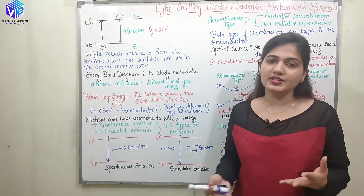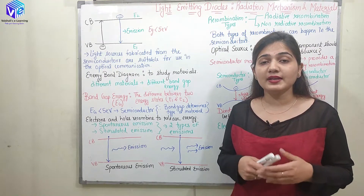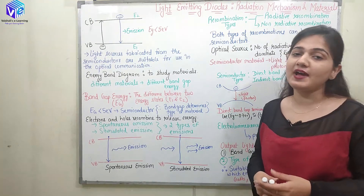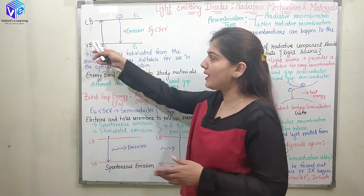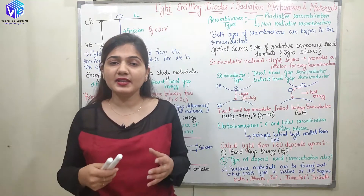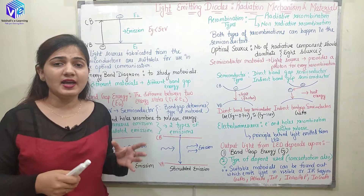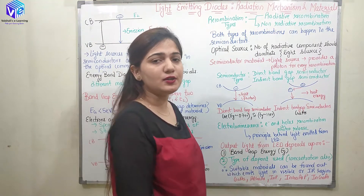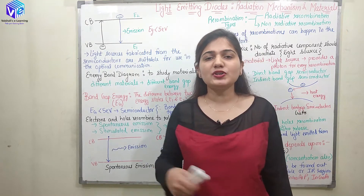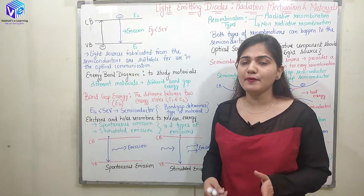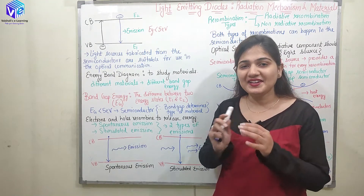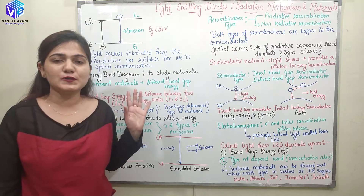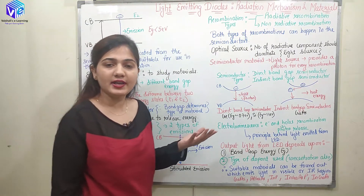All of them are differentiated on the basis of the energy band diagram. Insulators have an energy gap between the two energy bands greater than 5 electron volts, due to which electrons from the valence band cannot reach the conduction band, so insulators won't conduct — this is why insulators have high resistance. Conductors, on the other hand, have the valence band and conduction band overlapped with zero energy gap, so at room temperature conductors are always conducting.